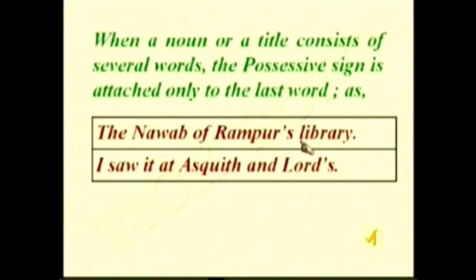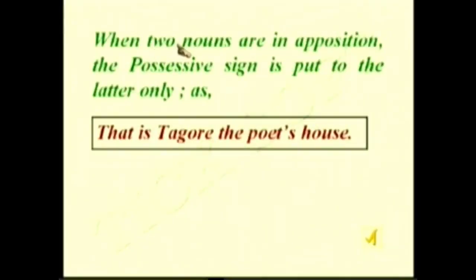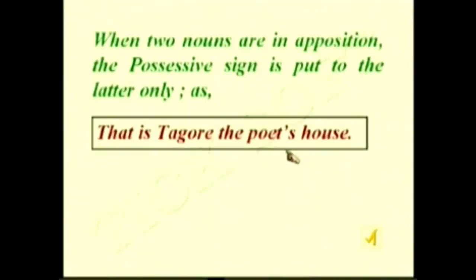'I saw it at Ashkut and Lord's' — the last word is Lord, so we have added apostrophe and S. When two nouns are in apposition, the possessive sign is put to the last word only, as 'that is Tagore the poet's house' — here Tagore and the poet indicate the same person, that's why we add apostrophe-S to the last word only.